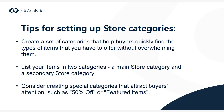Now that you know how to set up store categories, here are some tips to keep in mind. Create a set of categories that help buyers quickly find the types of items you have to offer without overwhelming them. List your items in two categories — a main store category and a secondary store category. Also consider creating special categories that attract buyers' attention.